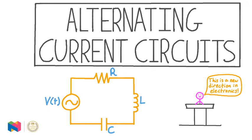In this lesson, we are going to learn how to calculate some of the important quantities associated with current, voltage, and power in alternating current circuits. We'll also learn about the different possible relationships between alternating current and alternating voltage, depending on whether the circuit is resistive, capacitive, or inductive.